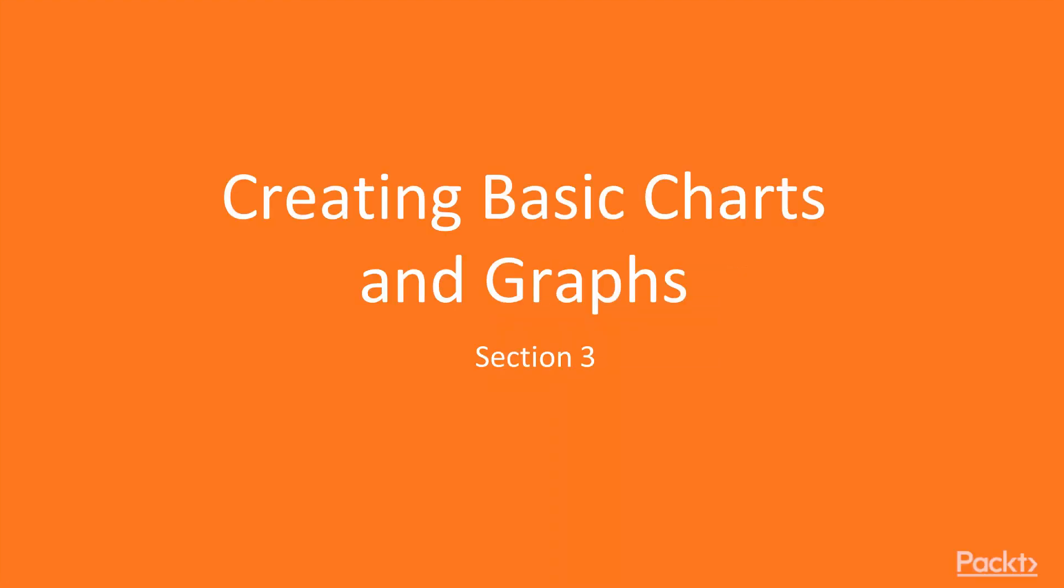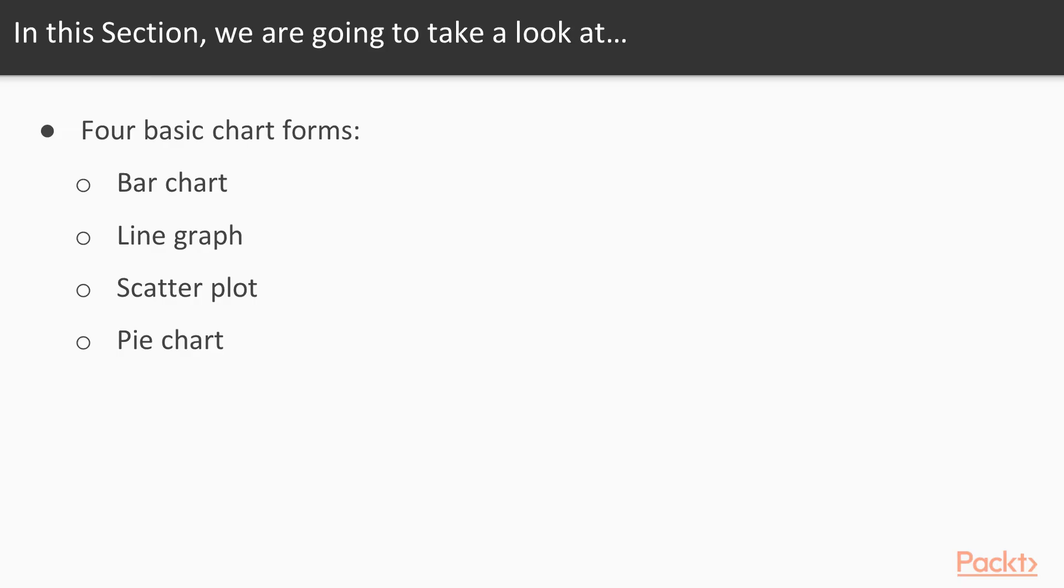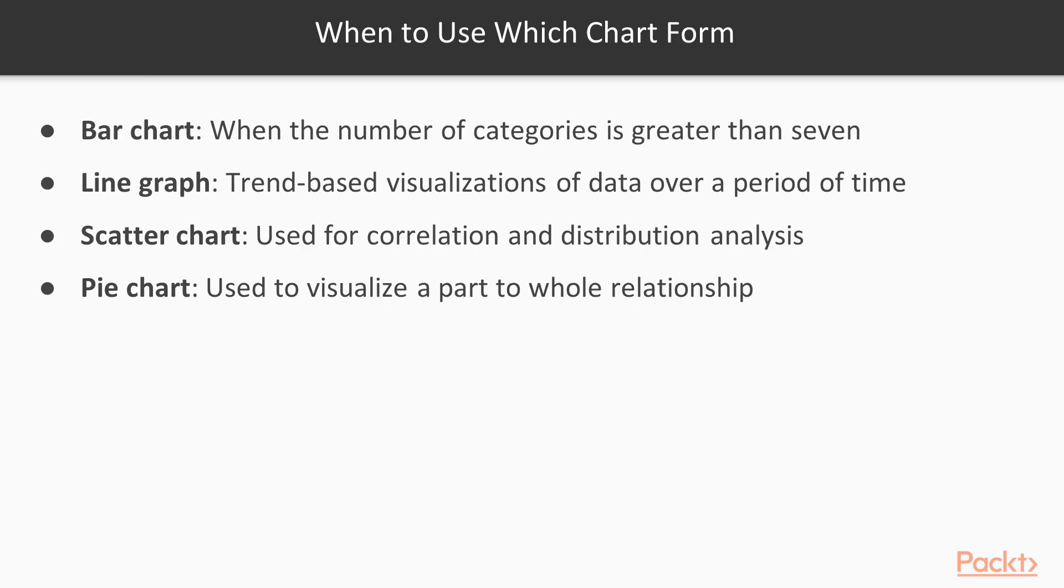In this section we are going to take a look at four basic chart forms: bar chart, line graph, scatter plot, and pie chart. When to use which chart form? Bar chart: use bar charts, also called horizontal column charts, instead of column charts when the number of categories is greater than 7 but not more than 15, or for displaying a set with negative numbers.